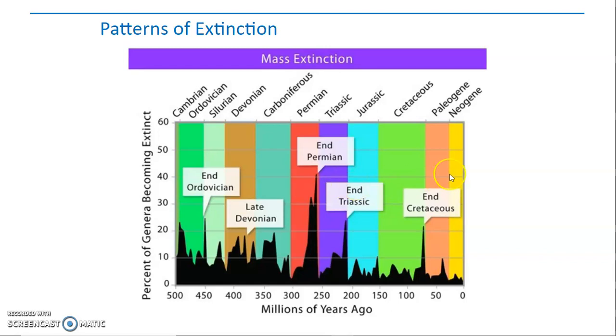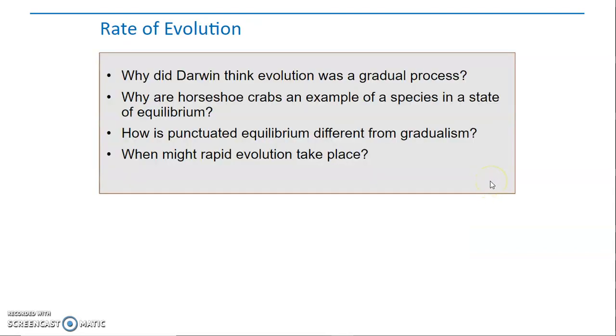So the rate of evolution. Why did Darwin think evolution was a gradual process? Why are horseshoe crabs an example of a species in a state of equilibrium? How is punctuated equilibrium different from gradualism? And when might rapid evolution take place?